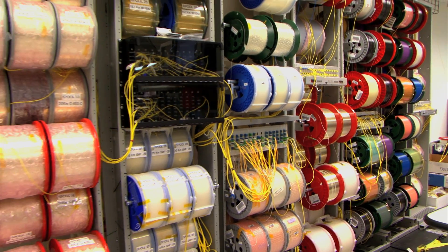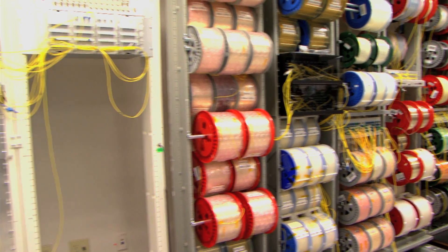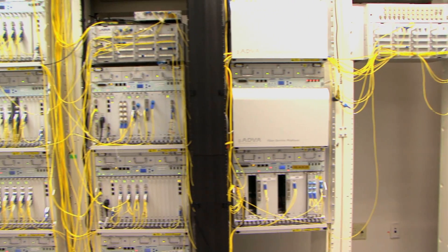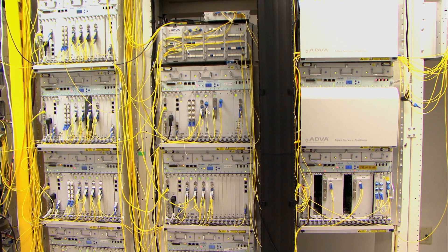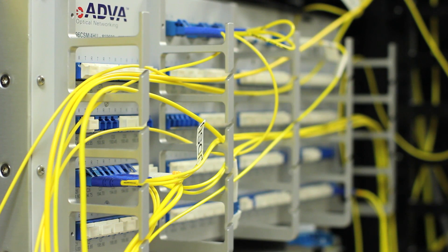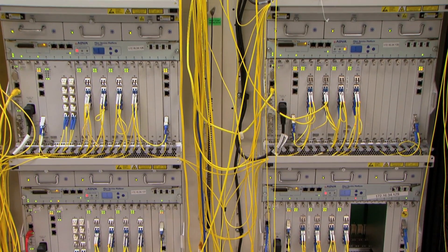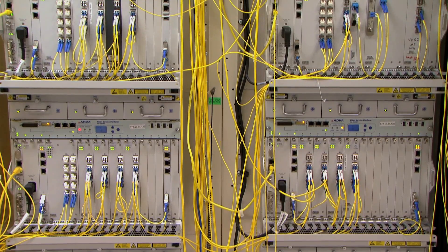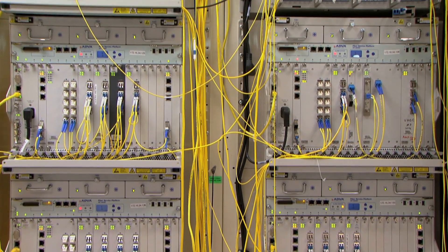These are flexible grid ROADMs which can operate with colorless, directionless and contentionless features. What this really means is that you can take a wavelength into any direction on any color and you can actually add drop multiple wavelengths of the same color and that's the contentionless capability.